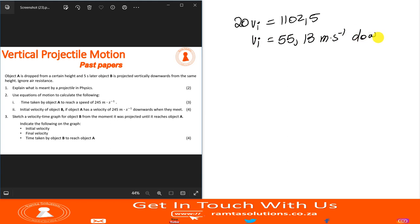So 20 V sub I is equal to 1102.5. Now this divided by 20 will be 55.13. So V sub I will be 55.13 meters per second downwards. Of course, your answer is 55.125. I have rounded it off to two decimal places.